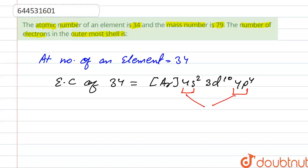So the number of electrons in 4s and 4p is 2 plus 4, which is 6. So the total number of electrons in the outermost shell of the element whose atomic number is 34 is 6. This is our correct answer. Thank you.